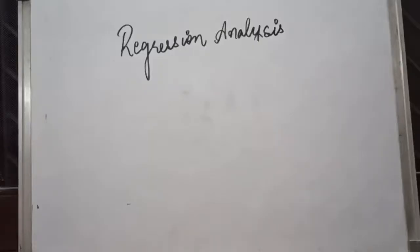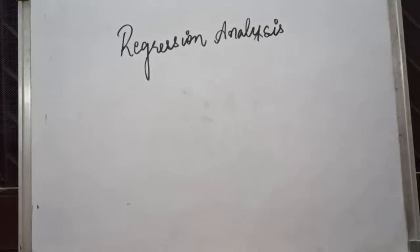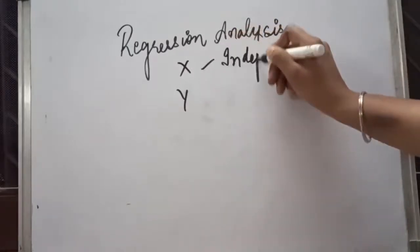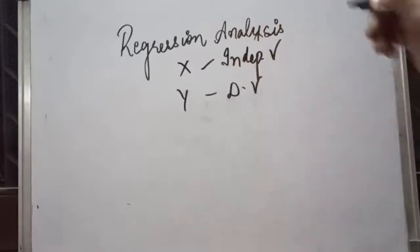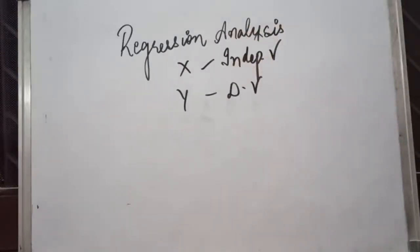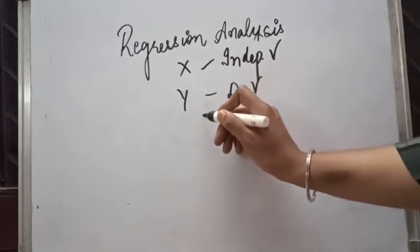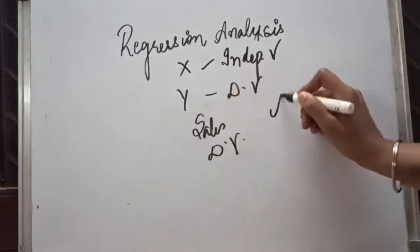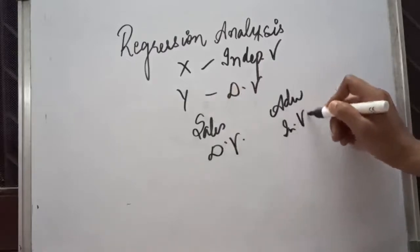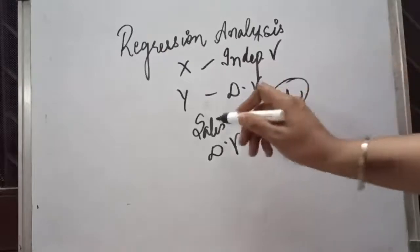The next topic for discussion is regression analysis. As you have seen in case of correlation, we try to find out the relationship between two variables, but here in regression we try to find out the dependency of one variable on the other. Variable x is an independent variable while variable y is a dependent variable. For example, sales of an organization depends upon advertising, so sales is a dependent variable and advertising is an independent variable. The firm can change the expenditure on advertising and accordingly the sales will change.